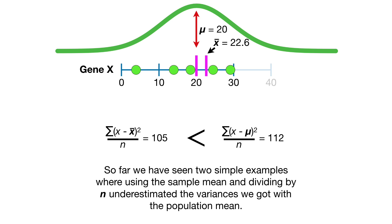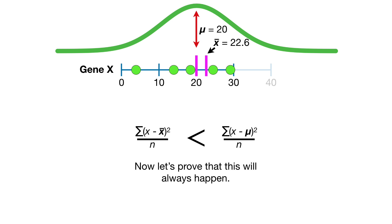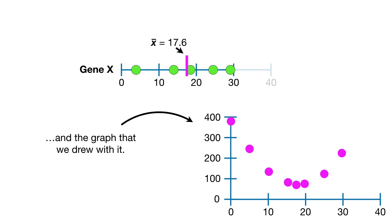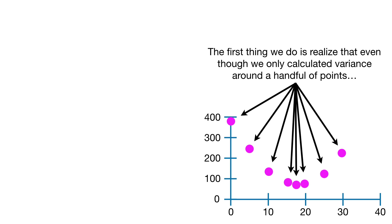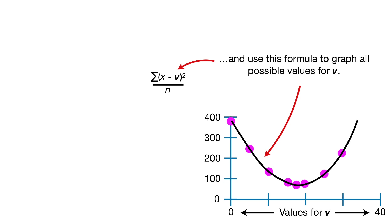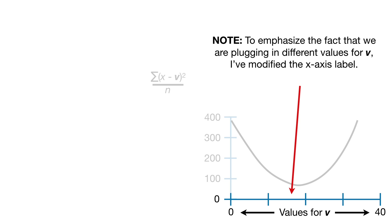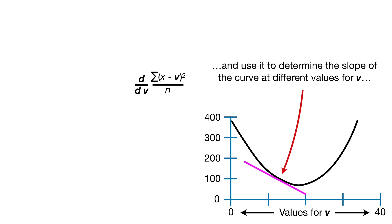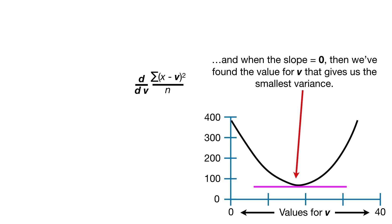So far we've seen two simple examples where using the sample mean and dividing by n underestimated the variance we got with the population mean. Now let's prove that this will always happen. We go back to the original data and realize that even though we only calculated variance around a handful of points, we can replace x-bar with an unknown value v and use this formula to graph all possible values for v. Now we take the derivative of this formula with respect to v and use it to determine the slope of the curve at different values for v. When the slope equals zero, we've found the value for v that gives us the smallest variance.